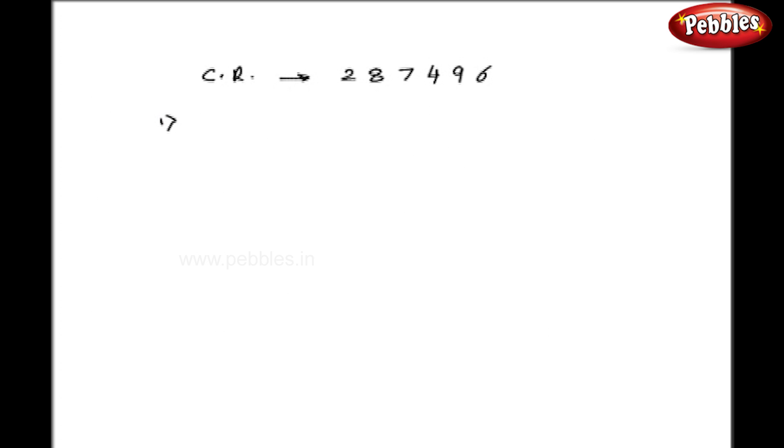Now let us take one figure: 287496. We have to find out the cube root of this. Now I will split this figure in two parts, left hand side and right hand side. Simply give one stroke after first three digits. So here I got a stroke after first three digits. That is my right hand side.